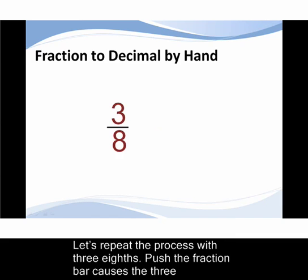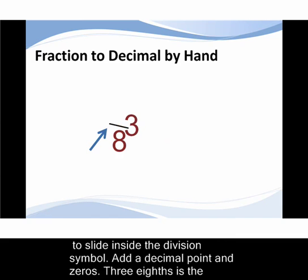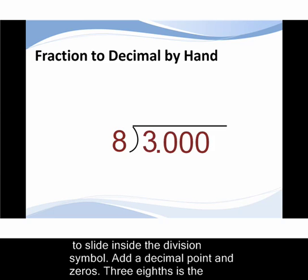Let's repeat the process with three eighths. The push on the fraction bar causes the three to slide inside the division symbol. Add a decimal point and zero.